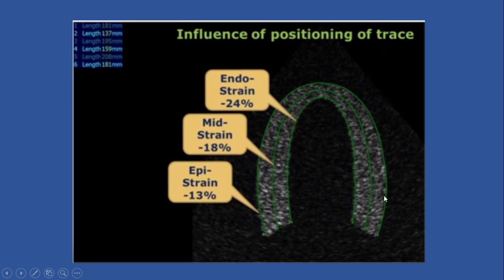However, this concept is used by the machine in speckle tracking and tissue Doppler strain for measuring global longitudinal strain. As a strain task force for standardization, we use the endocardial line for our measurement in global longitudinal strain.